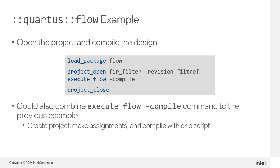The execute_flow command runs one of the predefined flows. The execute_module command runs a module, which is a command line executable. The flow package is not loaded by default in any command line executable, so you need to load it using the load_package command before running any commands in the package. Here's a simple example: the command to perform compilation is execute_flow compile. Intel FPGA recommends using execute_flow instead of separate calls to quartus_syn, quartus_fit, quartus_asm, etc.